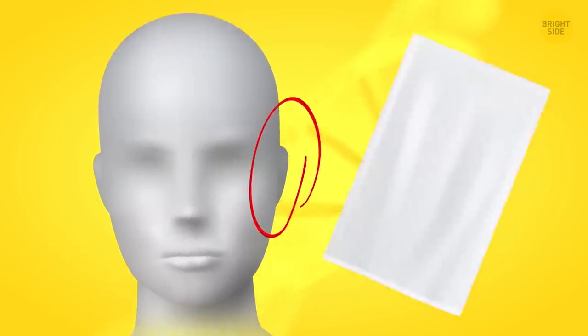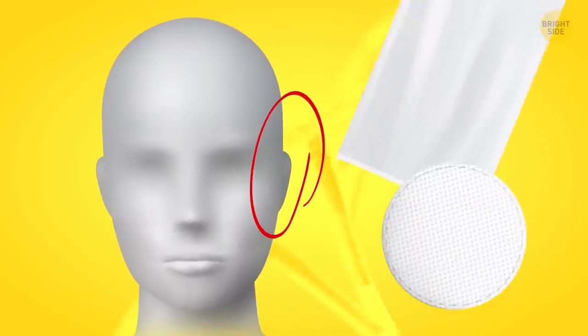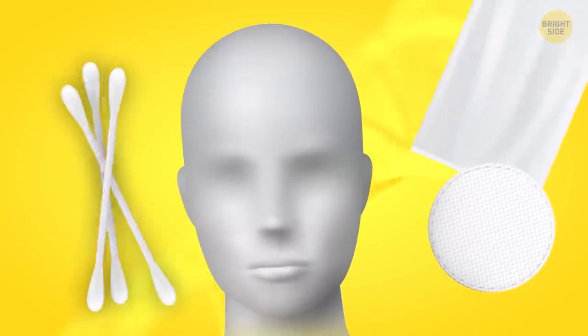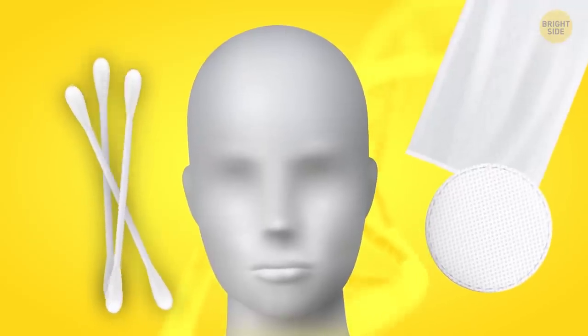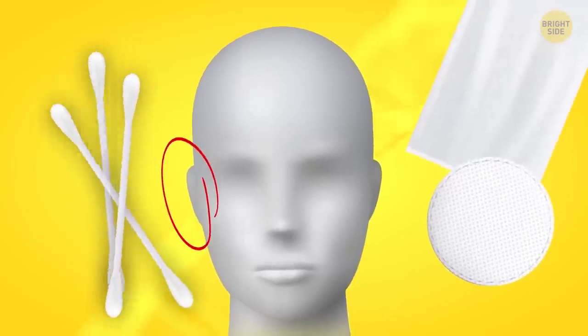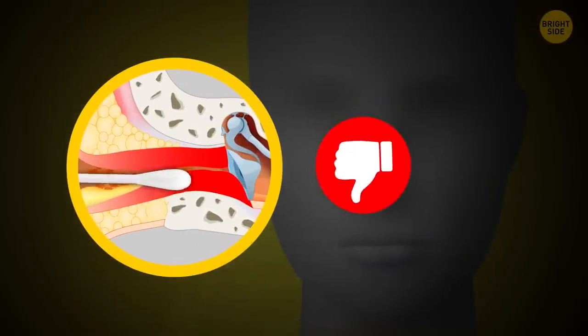After that, dry the outer part of your ears with a towel or a cotton pad. This time, you can also use a wet cotton swab, if you have any left, to clean the outer part too. Just don't go too deep inside.